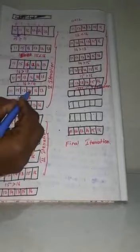Next comparison: compare 16 and 14. 16 is greater than 14, so change the values. Array becomes: 11, 15, 12, 14, 16, 13. Next, compare 16 and 13. 16 is greater than 13, so swap the values. Array becomes: 11, 15, 12, 14, 13, 16.